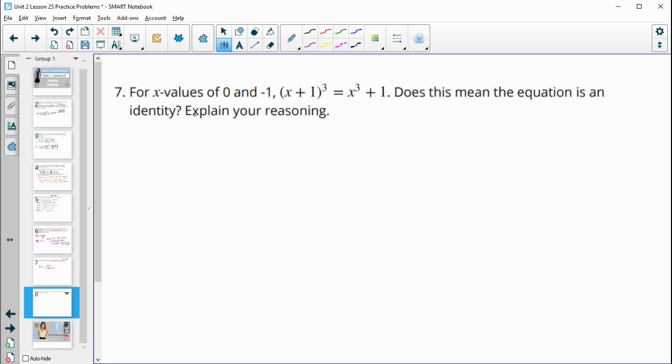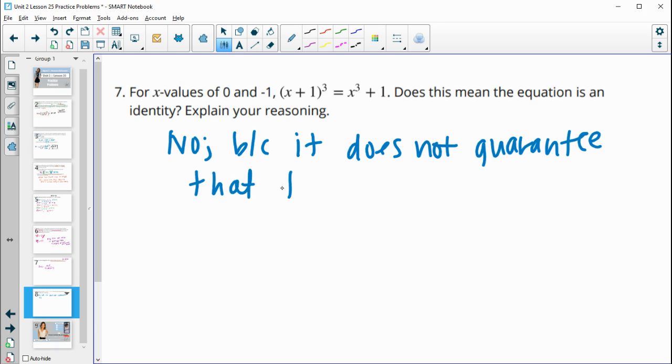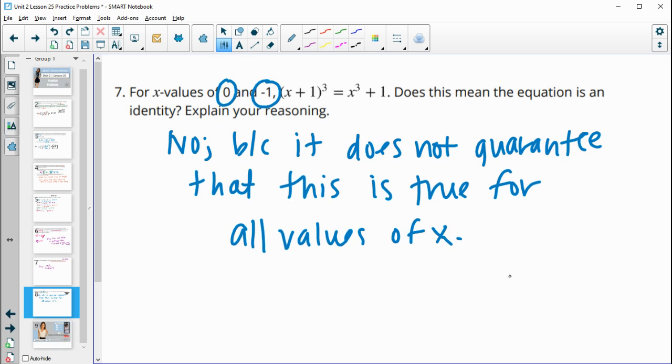Then number 7, for the values of 0 and negative 1, X plus 1 cubed is equal to X cubed plus 1. Does this mean the equation is an identity? And this does not, because it does not guarantee that all values of X will work. So it does not guarantee that this is true for all values. So it only guarantees that it's good for these two not all values, and an identity has to have all values of X be true into the expressions.